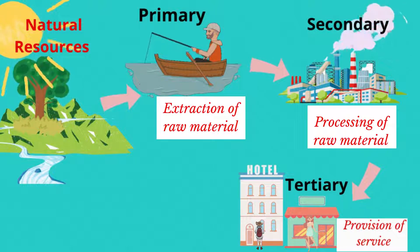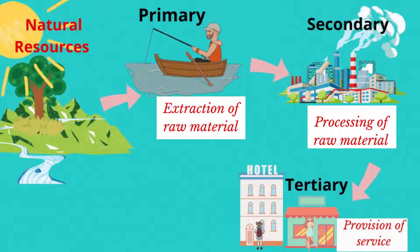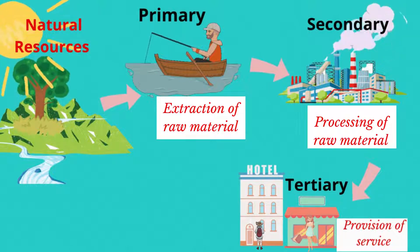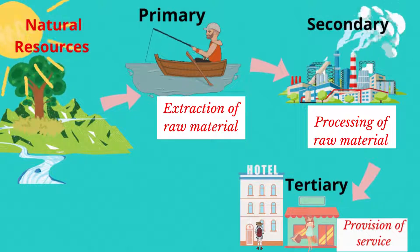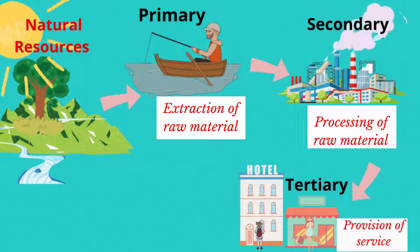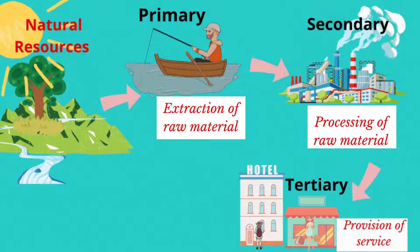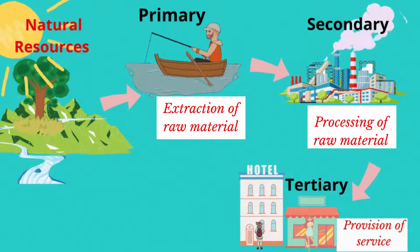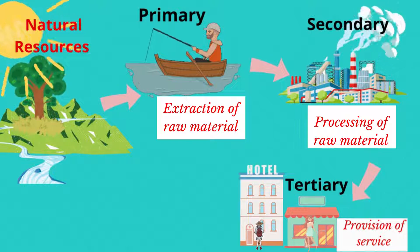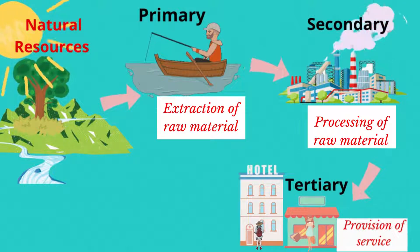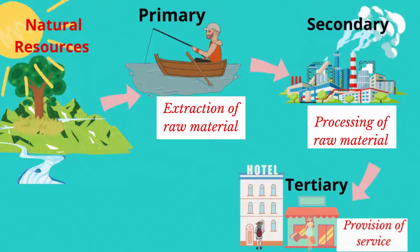Non-renewable resources are extracted and harvested by primary industries, which include fishing, mining, farming, and so forth.